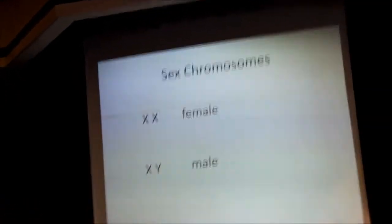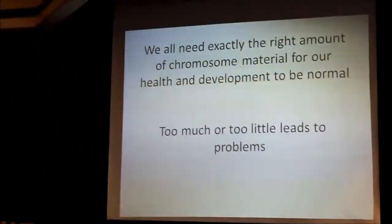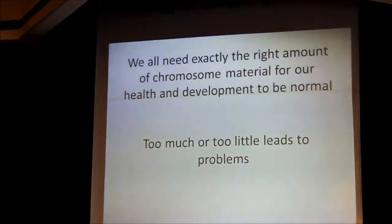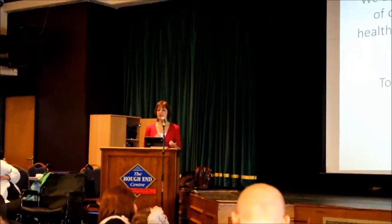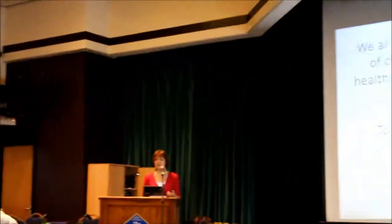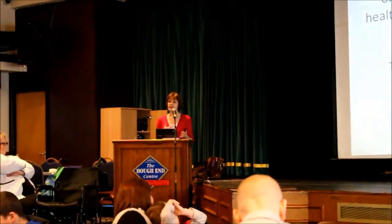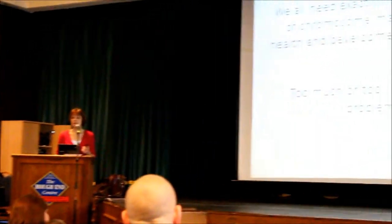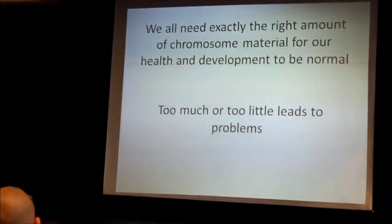We've all got to have 46 chromosomes, and we all need exactly the right amount of chromosome material in order for our health and development to proceed. So if you have too much chromosome material — if you've got an extra chromosome, for instance — or if you've got too little, then in general you can run into problems with the wrong amount of chromosome material.